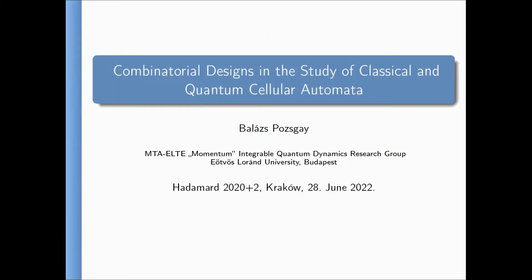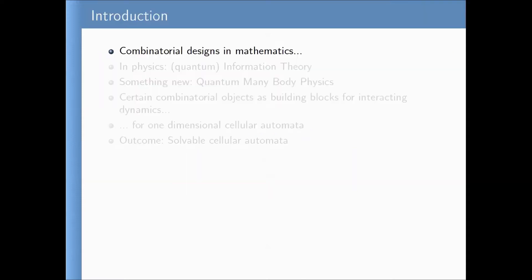This talk will be a little bit different from the other talks. We will talk about combinatorial designs in quantum many-body physics. I come from a community of quantum many-body physics, dealing with integrable and exactly solvable models. Combinatorial design theory is part of mathematics, but it also appeared in physics — for example, in information theory or quantum information theory. In this talk, I will discuss a different application: to quantum many-body physics.